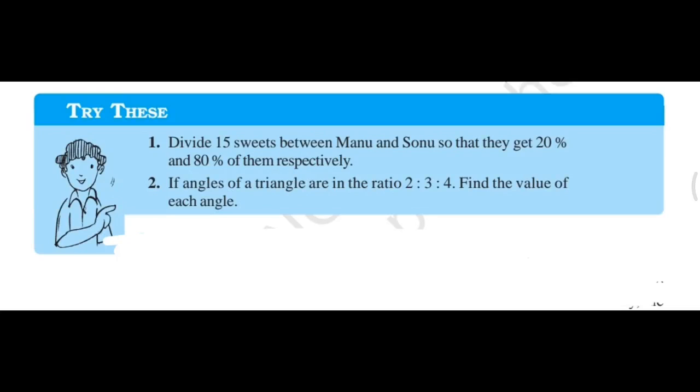This is Triadhi's page number 166, Chapter 8, Class 7th Maths NCERT. Question number 1: Divide 15 sweets between Manu and Sonu so that they get 20% and 80% of them.